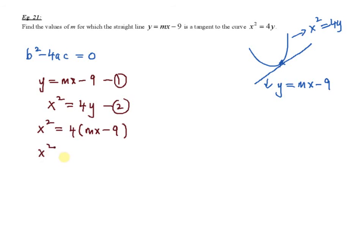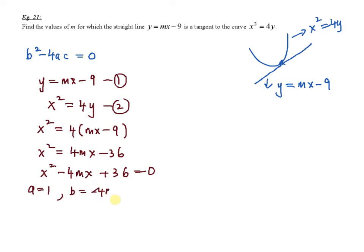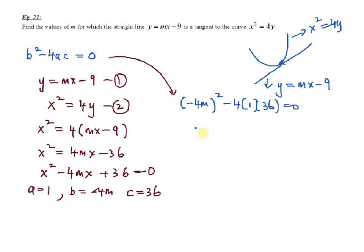Now rearrange into the general form of a quadratic equation. Bring everything over: x squared minus 4mx plus 36 equals 0. You can identify the coefficient of x squared (which is a), the coefficient of x (which is b, here negative 4m), and the constant (c, which is 36). So the condition b squared minus 4ac equals 0 gives: negative 4m squared minus 4 times 1 times 36 equals 0, which simplifies to 16m squared minus 144 equals 0.